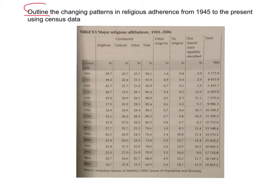Outline means to sketch in general terms — it's almost like an overview. But what are we outlining? We need to keep reading. Outline the changing patterns in religious adherence. We should identify the importance of 'changing patterns' because this tells us that we're looking for a change or shift — but a change or shift in what? Well, religious adherence.